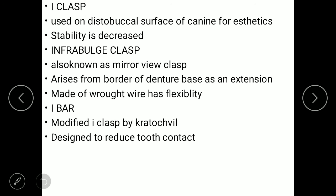A disadvantage of the I clasp is that stability is decreased. The infra-bulge clasp, also known as the mirror view clasp, arises from the border of the denture base as an extension, mainly made of wrought wire, and has a flexibility advantage. The I-bar is a modified I clasp developed by Kratochvil and is mainly used to reduce the tooth contact area.